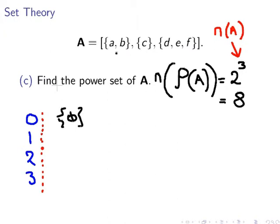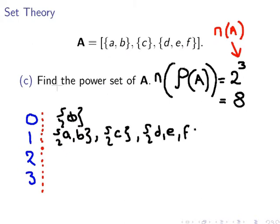Elements of cardinality 1, the three components themselves: A, B, C, and lastly, D, E, and F. Those are subsets of size 1, of cardinality 1.